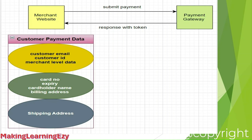On the left side we have the merchant website and on the right side we have the payment gateway, which is used for payment processing. Suppose a customer has visited the merchant website and submitted the payment for a particular order. Once the customer submits the payment, the merchant website or merchant application will send the payment data to the payment gateway for processing. This payment data, also known as customer payment data, contains the customer's email, customer ID, card details, card number, expiry date, card holder name, billing address, and shipping address.